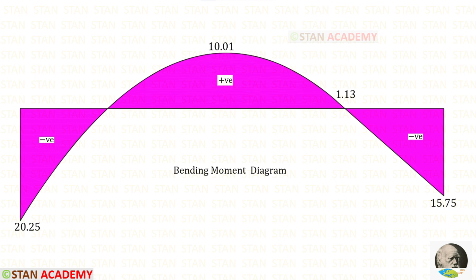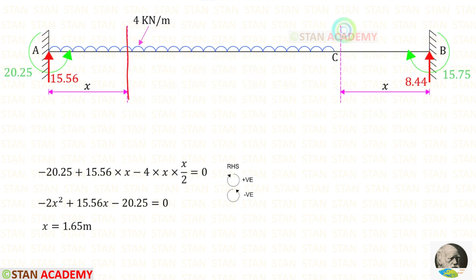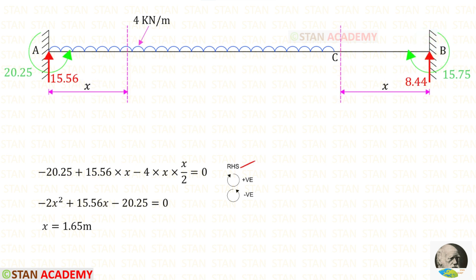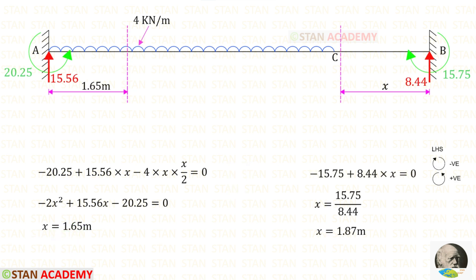Looking at the bending moment diagram, there are two points where the bending moment becomes zero; these are called points of contraflexure. Making sections at these two points — one at distance x from point A and another at distance x from point B — and applying the right-hand side rule for the first section and the left-hand side rule for the second, we set the moment equal to zero and solve using a calculator. The first point of contraflexure is at x = 1.87 meters from point A.